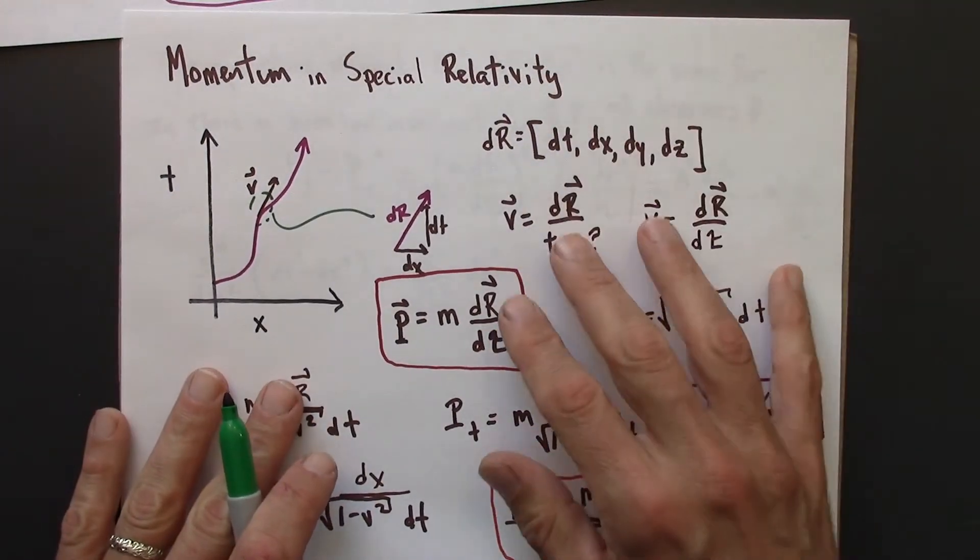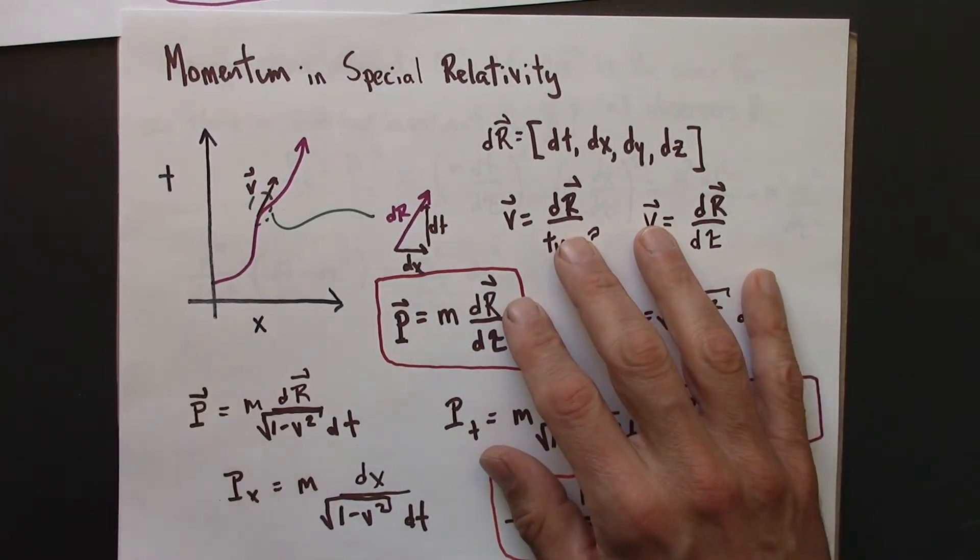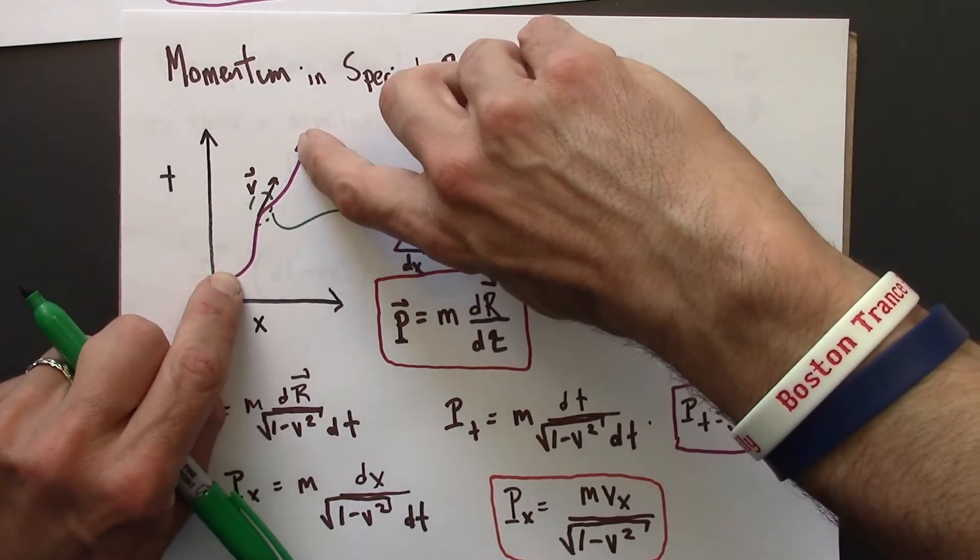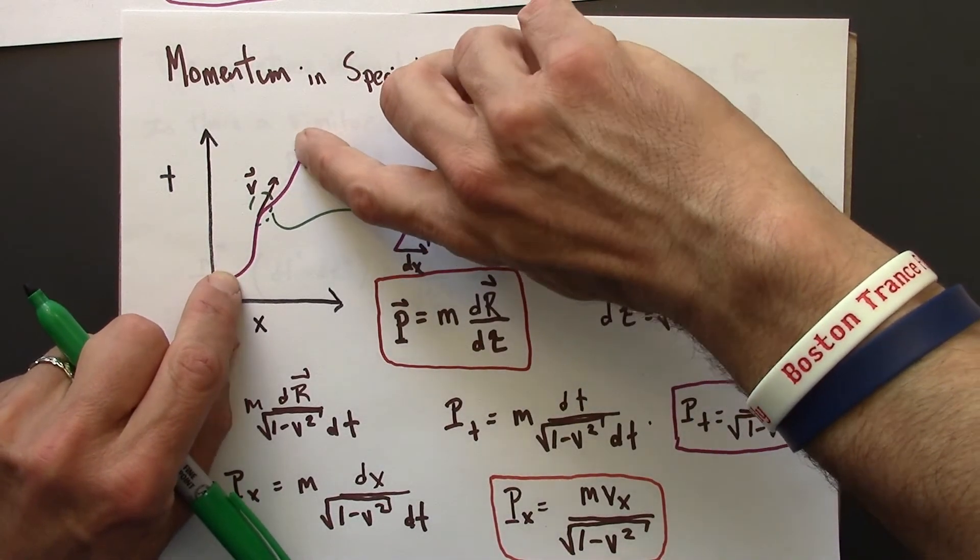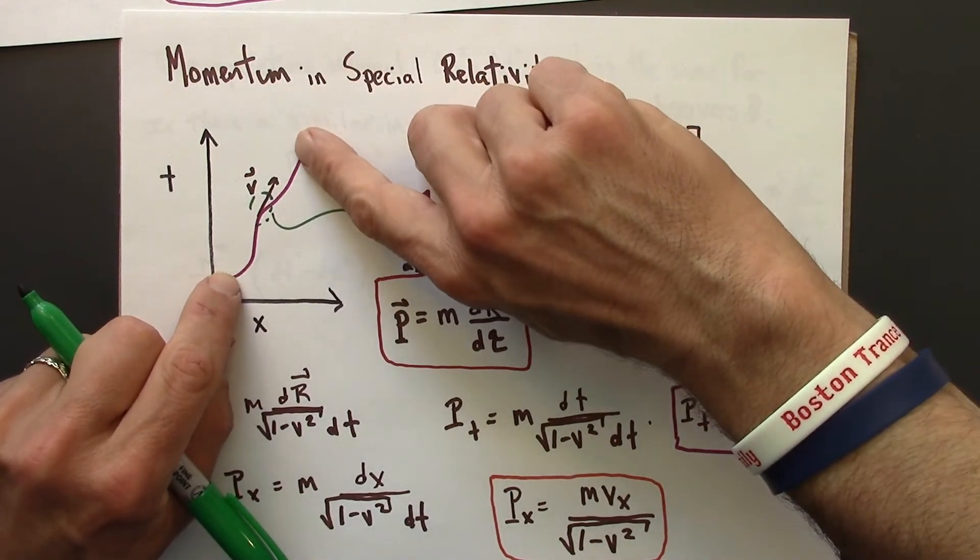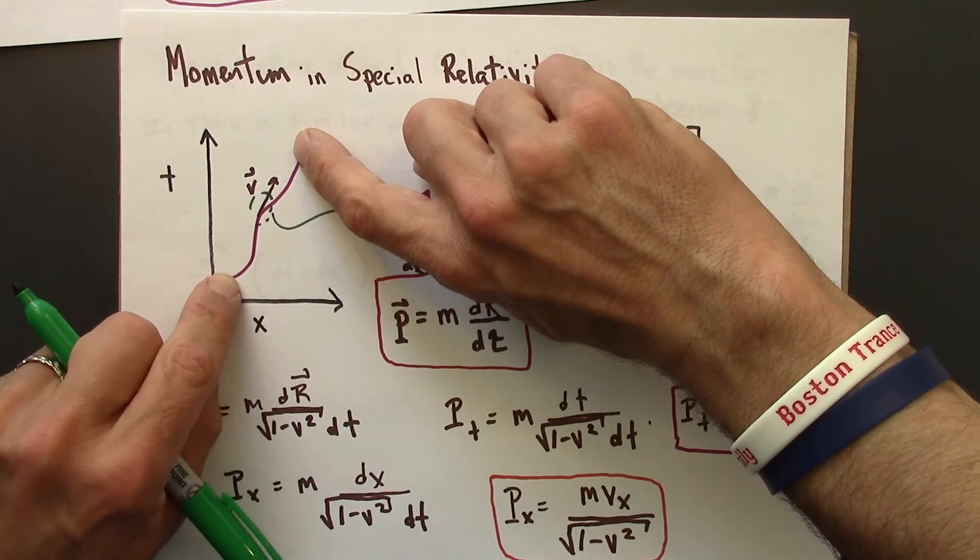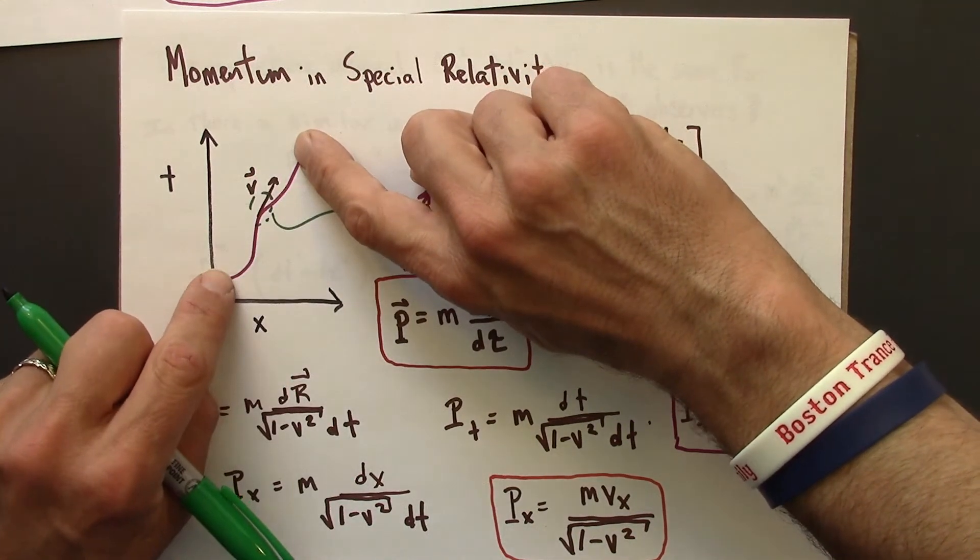So a spacetime interval has to be for an inertial clock. An inertial clock present at two events. In general, like if I went from here to here, the clock associated with this object would not measure the spacetime interval, because that's not an inertial clock. It's not moving at a constant speed.